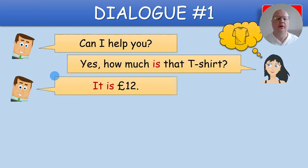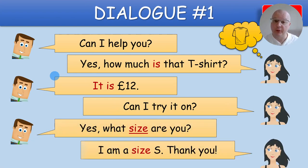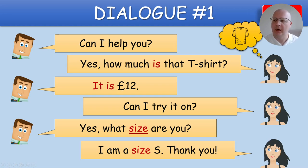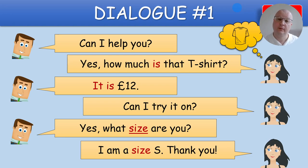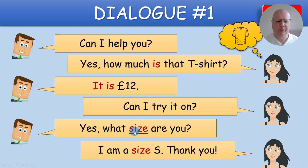Exercise number four: Dialogue Practice. Here's the first dialogue — you can read it together with the students, but before you do, it's best if they listen to it first. You can read it to them or click the play button and listen to the recording. Let me click it so you can hear what it sounds like: 'Can I help you?' 'Yes, how much is that T-shirt?' 'It is 12 pounds.' 'Can I try it on?' 'Yes, what size are you?' 'I am a size S.'